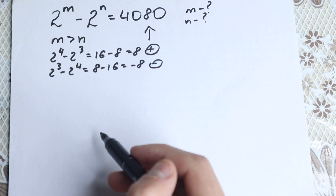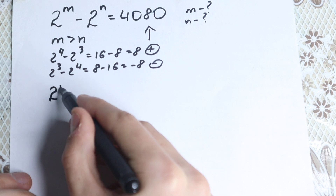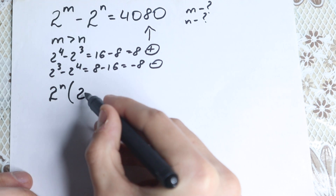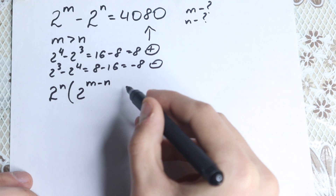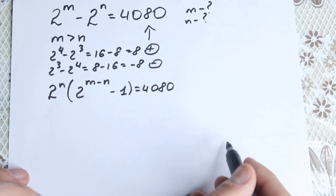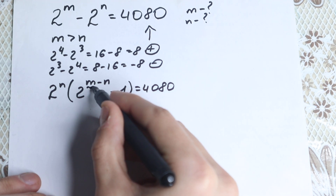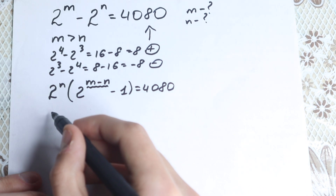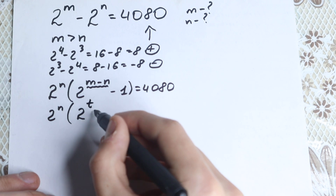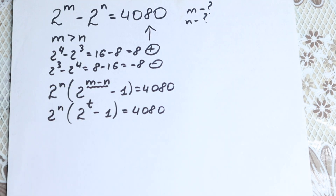What we're going to do next? I suggest we factor 2 to the power n from the expression. So we get 2 to the power n times, in parentheses, 2 to the power m minus n minus 1, equal to 4080. This is our first key step. Now, let's introduce a substitution because m minus n is not convenient to work with directly. Let t equal m minus n, so we rewrite as 2 to the power n times 2 to the power t minus 1, equal to 4080.